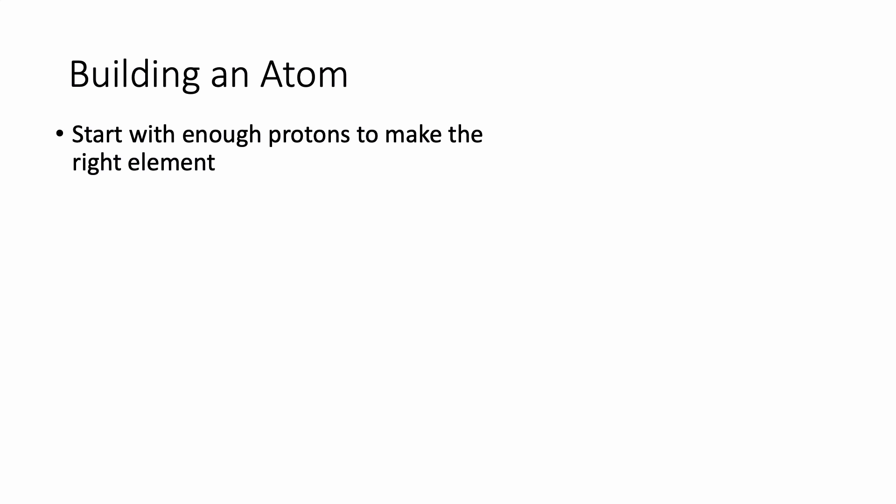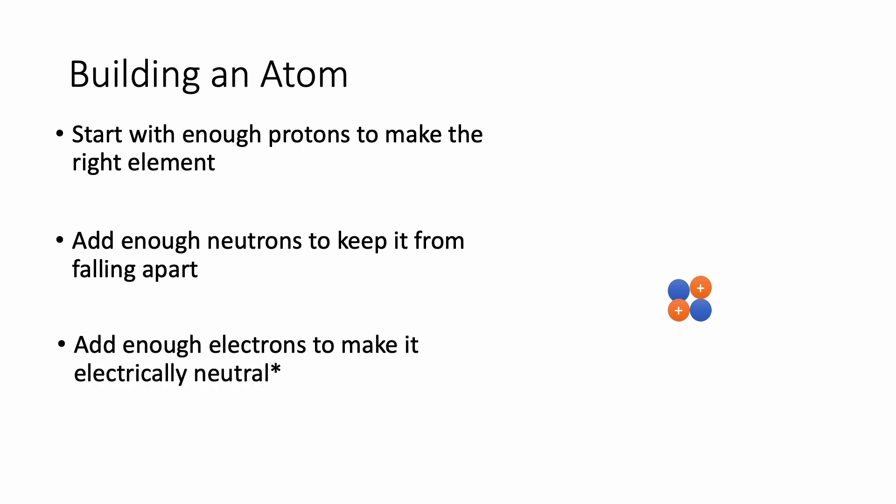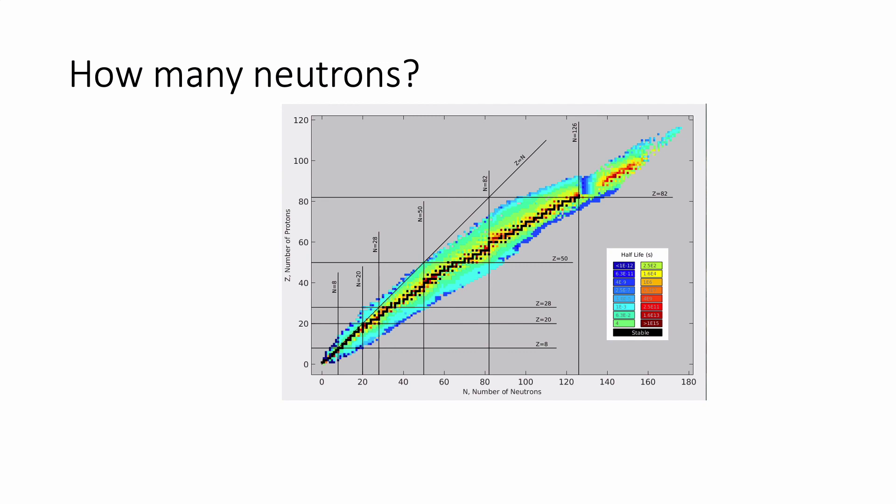So if you want to build an atom, basically you're going to take enough protons to make the right element. So there are your protons. You're going to add enough neutrons to keep it from falling apart. And then you're going to add enough electrons to keep it from having a charge, so basically making it electrically neutral is what we call it. Now it's true that you don't have to have electrically neutral atoms. In fact, we'll talk a lot about ions, but we usually start off that way. So there are the electrons. You can see here we had two protons, so we're going to have two electrons. So one of the questions people ask is how many neutrons do you need to add in order to make an atom stable? And the answer is it kind of depends. And so this is something that we will talk a bit more about in chapter 22. But basically, you can have different numbers of neutrons for a given element. And the more protons you have, the more neutrons you need.